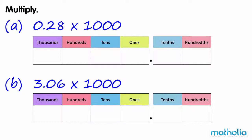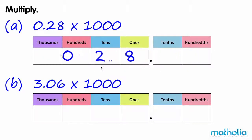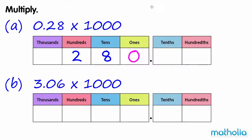Multiply 0.28 times 1000. Let's write 0.28 in a place value chart. We can multiply by 1000 by shifting the digits three places to the left. 0.28 times 1000 equals 280.